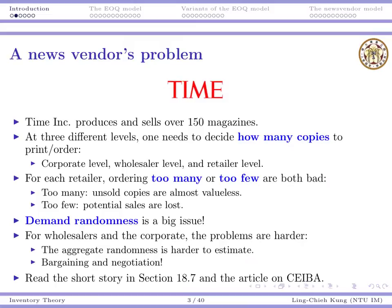Actually, sometimes the aggregate problem is easier, sometimes harder — we don't have time to cover it in this course, but you can imagine that when you have multiple random variables adding together there may be complications. Also, there may be bargaining and negotiation issues between downstream and upstream parties, which we will discuss in the game theory portion of this course.